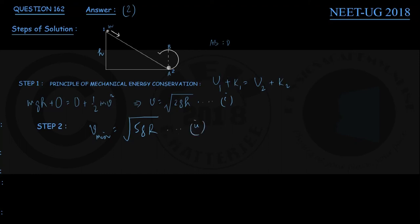So once we get it, step number 3: combine equations 1 and 2 and write from there that √(2gh) has to be equal to √(5gR) if this particular body has to just complete this vertical circle.